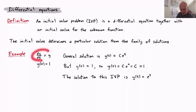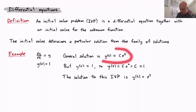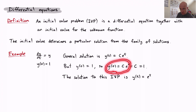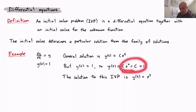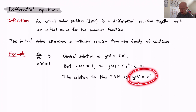Let's go back to dy/dt equals y and add the extra condition y of 0 equals 1 — there's the initial value. We've found the general solution already: y of t equals c·e to the t. The initial value gives us the extra information that y of 0 equals 1. Plugging in: y of 0 equals c times e to the 0, which must equal 1. Since c times e to the 0 equals c, we get c equals 1. So the solution to this initial value problem is y of t equals e to the t — one particular solution out of that family.